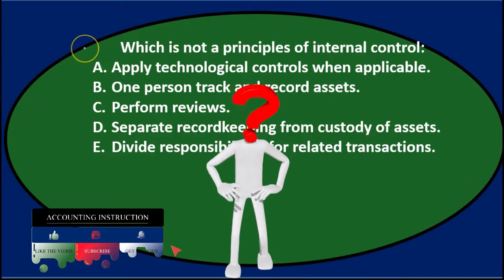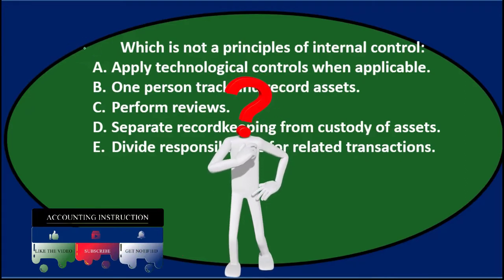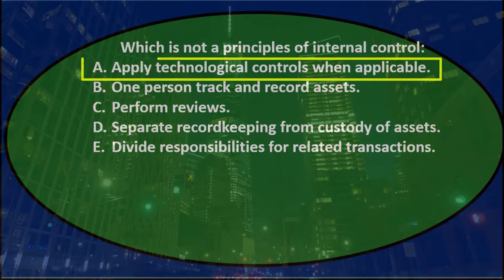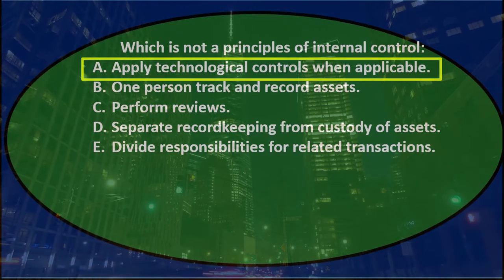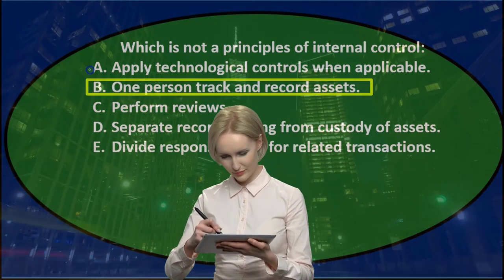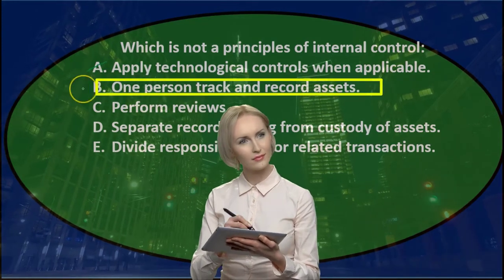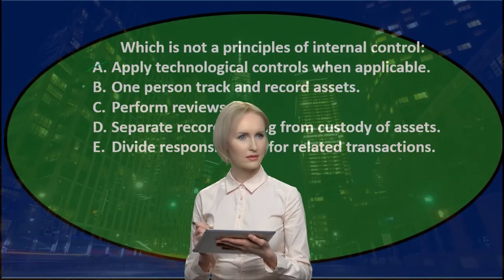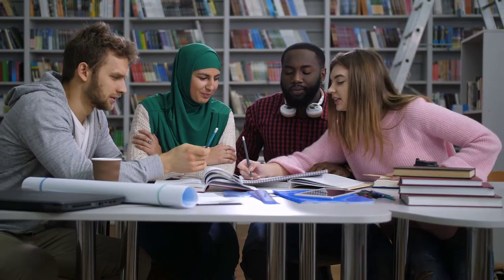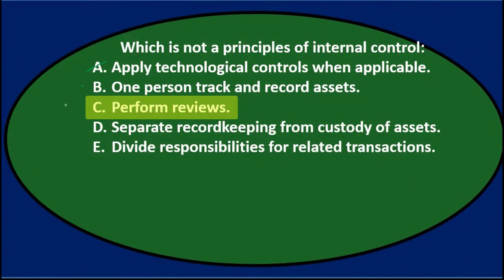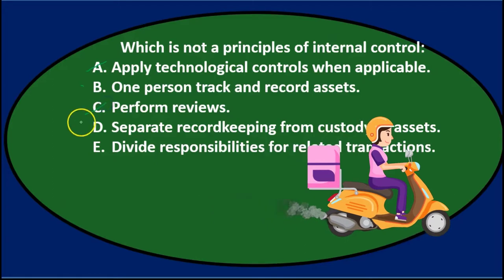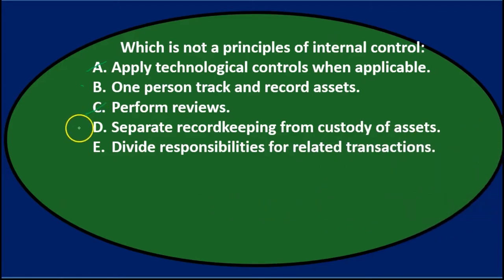We will read through this and use the process of elimination. A. Apply technological controls when applicable — that seems like something we would do, so I don't think it's that. B. One person track and record assets — we may want to have different people do that, so I'll keep that as a possibility. C. Perform reviews — that's going to be one of the things we do within internal controls; we'll have a review process to see that the system is in compliance.